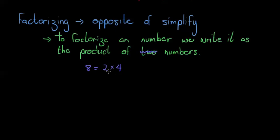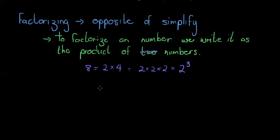We shouldn't say just two numbers — let's say the product of numbers, because there can be many. For example, 8 can also be 2 times 2 times 2, and using exponent notation that is 2 to the power of 3, which gives me 8.